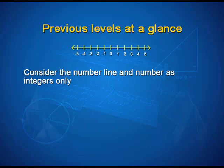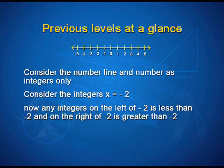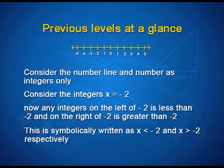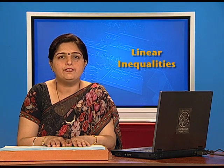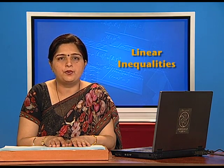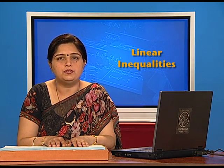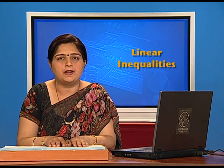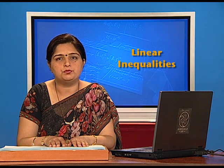Let us have a glance at the previous concepts. Consider a number line with integers marked on it, and consider the integer x = -2. Any integer on the left of -2 is less than -2, and any integer on the right of -2 is greater than -2. This is symbolically written as x < -2 and x > -2 respectively. For x < -2, the possible integral solutions are x = -3, -4, -5, and so on. For x > -2, the possible solutions are x = -1, 0, 1, 2, and so on.